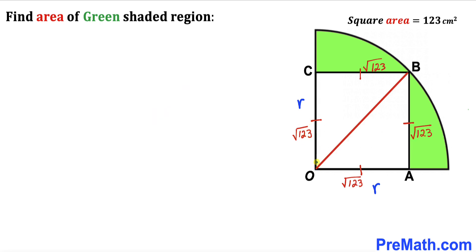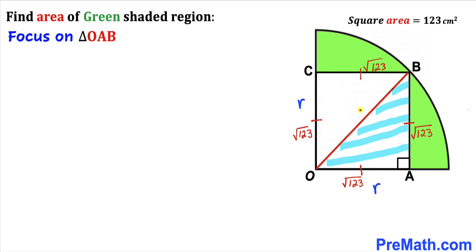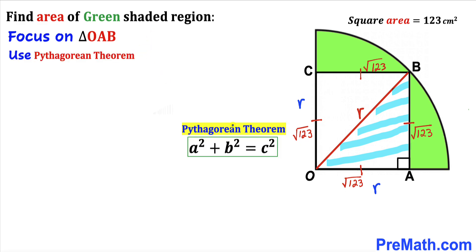In the next step, I connect center O with vertex B, giving us right triangle OAB. OB is the radius of the quarter circle, which I'll label as lowercase r. So the side lengths of triangle OAB are: r, square root of 123, and square root of 123.